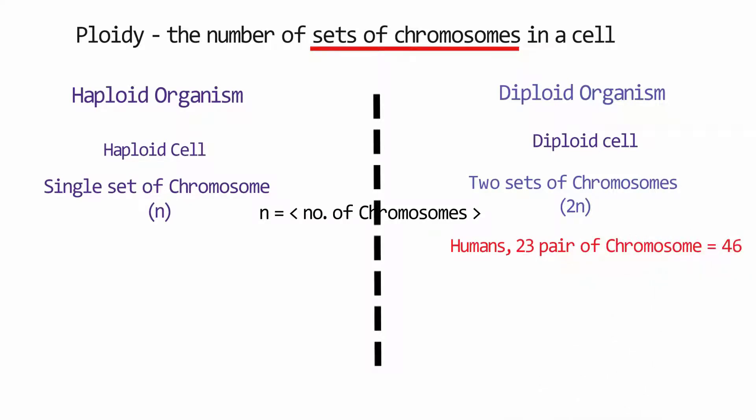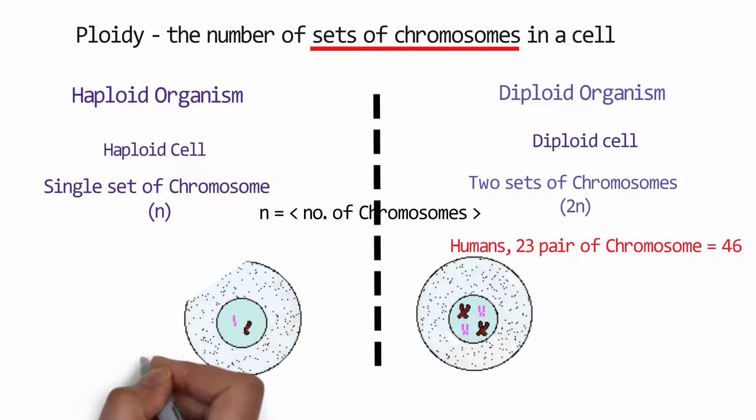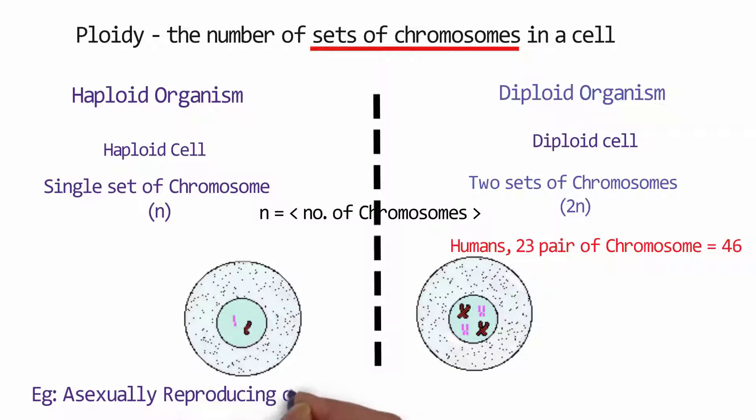An example of a diploid organism is humans, and humans have 23 pairs of chromosomes that equals 46. Now in this figure, you can clearly see the single set and the double set of chromosomes in haploid and diploid cells.